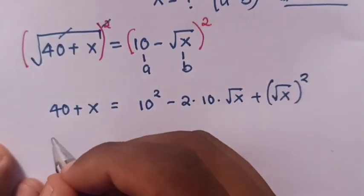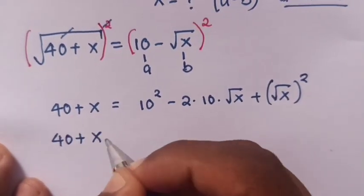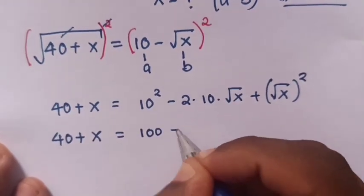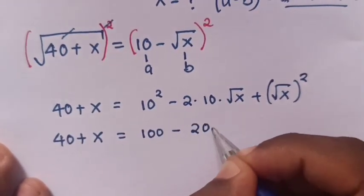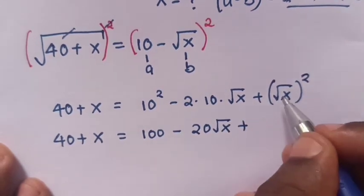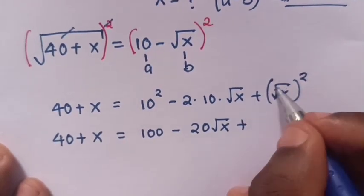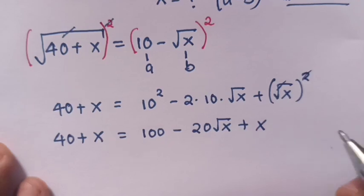It will be 40 plus x equals 100 minus 20 square root of x plus x, where the square root and power of 2 cancel, leaving x.